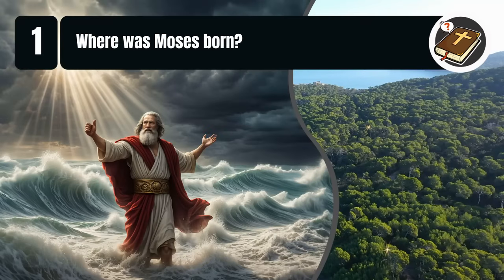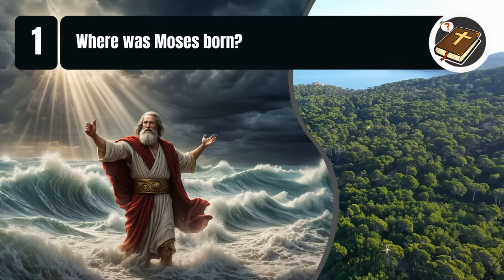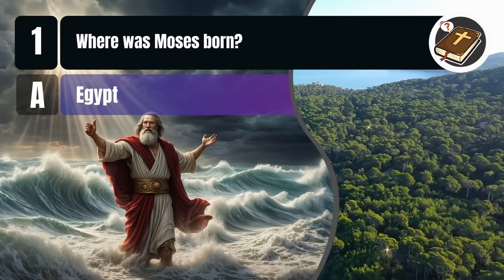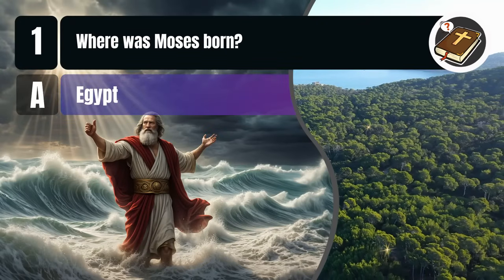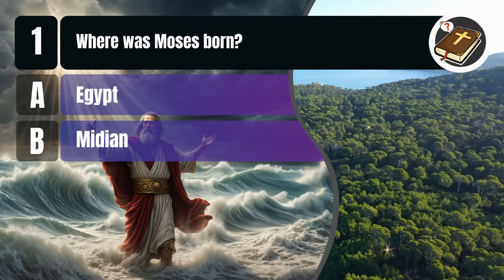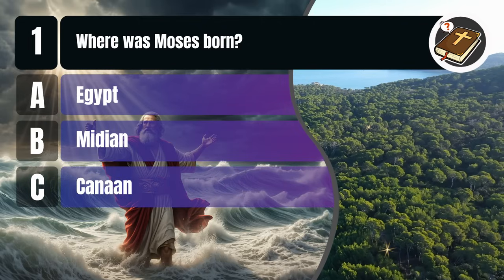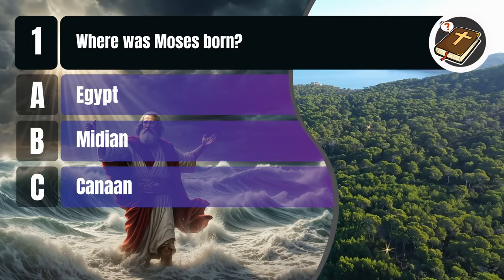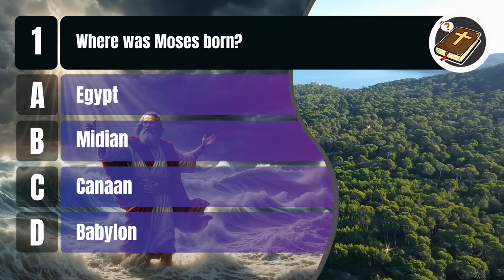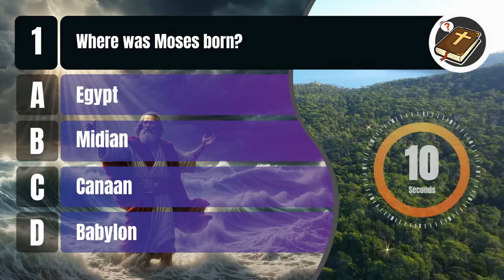Question 1. Where was Moses born? A. Egypt, B. Midian, C. Canaan, D. Babylon. You get 10 seconds.